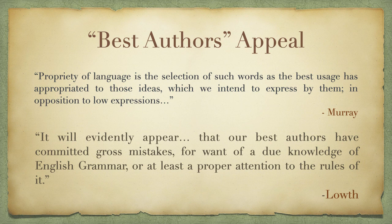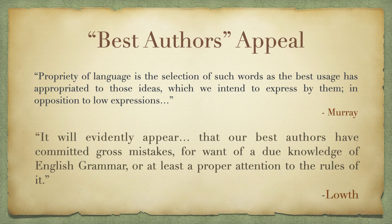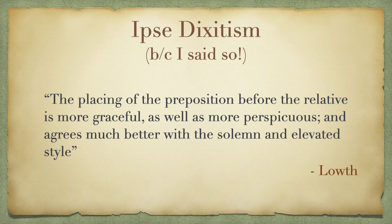Even though grammarians tried to appeal to the usage of the best authors, they didn't always agree just who those authors were, and sometimes they didn't even agree that the best authors knew what they were doing. It's very common for grammarians to pick out examples from canonical authors and call those examples mistakes. As Lowth notes, they did this because either those authors didn't know the rules — as he says, 'our best authors have committed gross mistakes for want of a due knowledge of English grammar' — or at least for want of proper attention to the rules. Of course, as we'll see, the rules they had in mind were often not established for many centuries after these original authors were writing. So they're blaming them for not knowing rules that would be codified several centuries later.